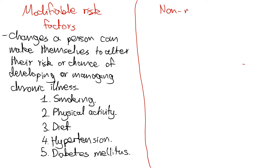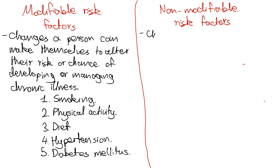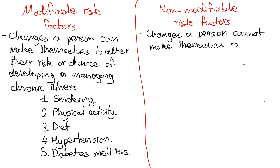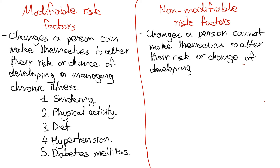Now let's look on the flip side and talk about non-modifiable risk factors. As their name suggests, and as you probably guessed, non-modifiable risk factors are changes a person cannot make themselves. They don't have control over them, and so they cannot alter their risk or chance of developing a chronic illness.